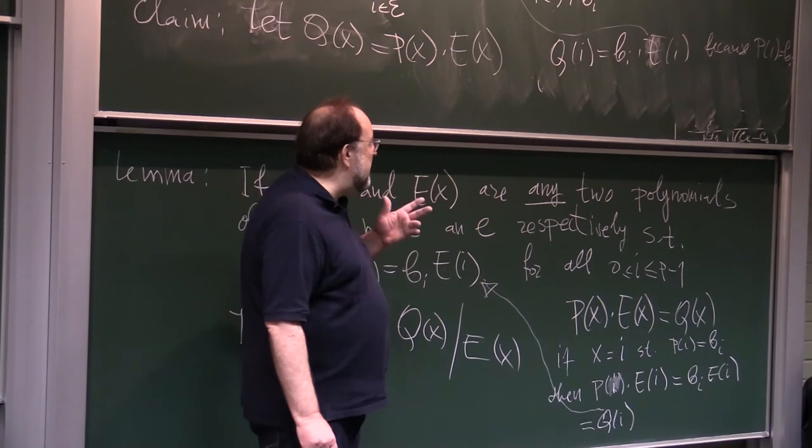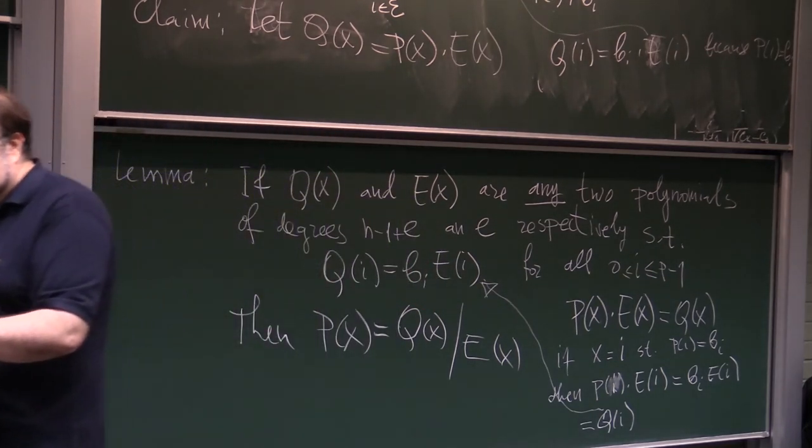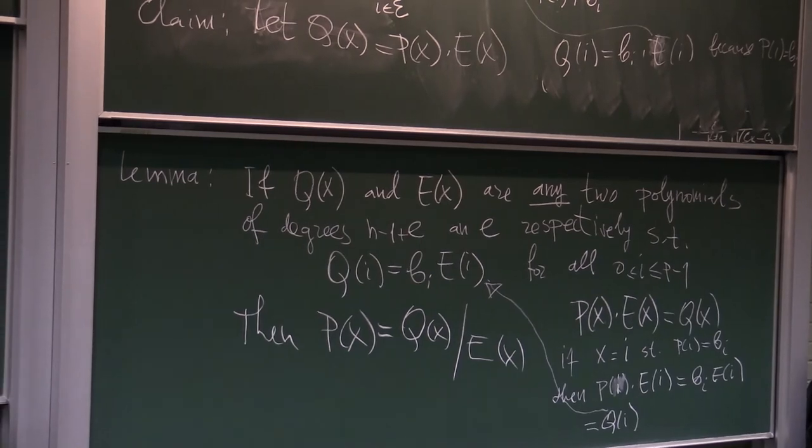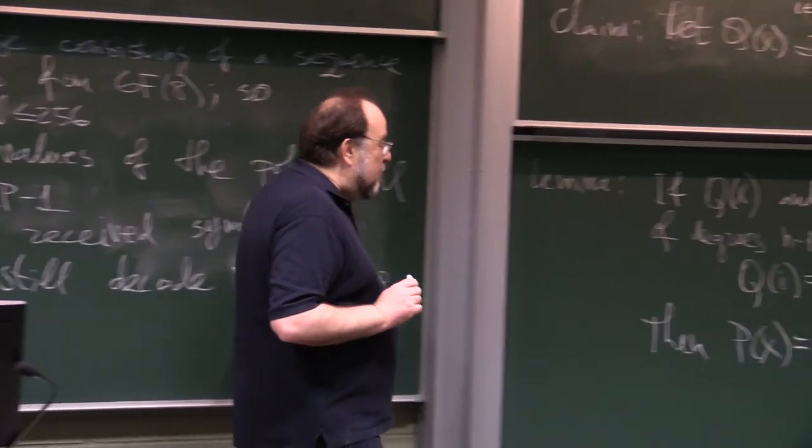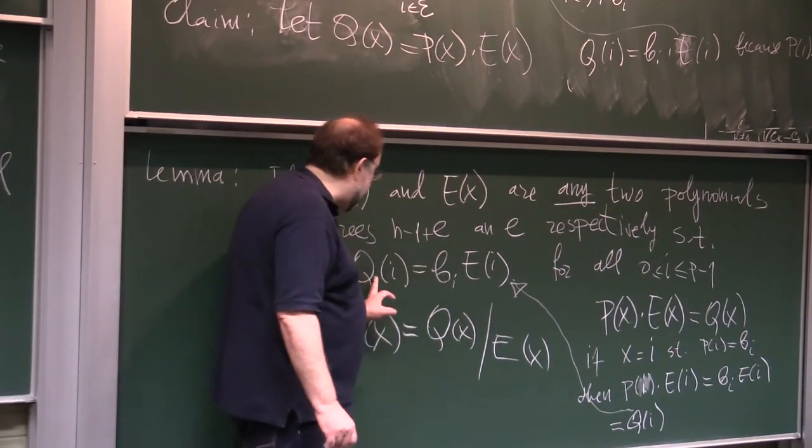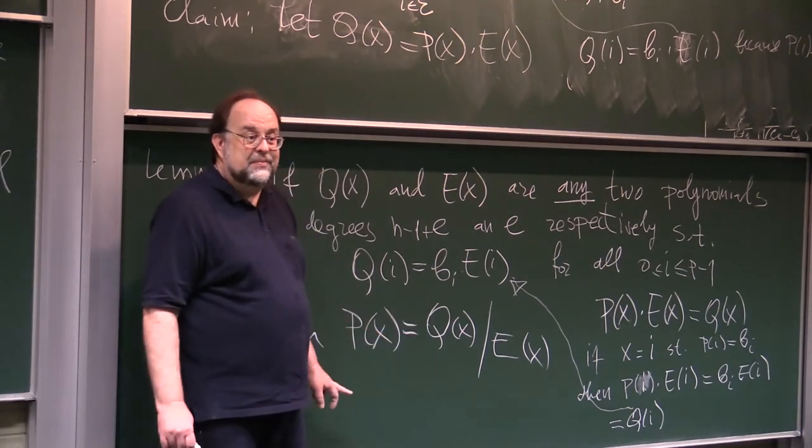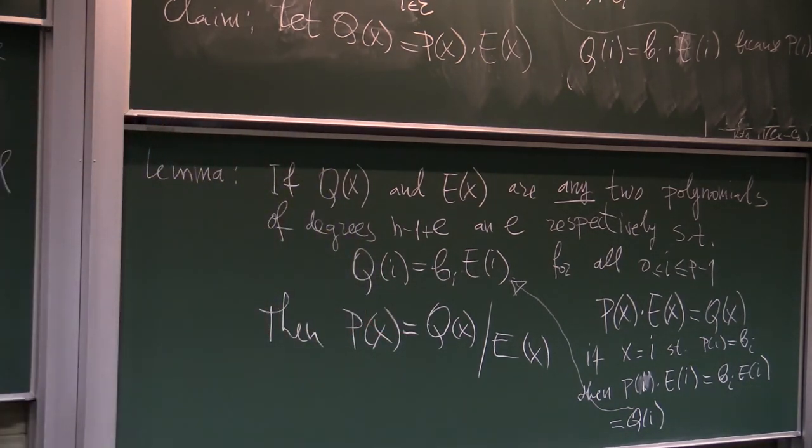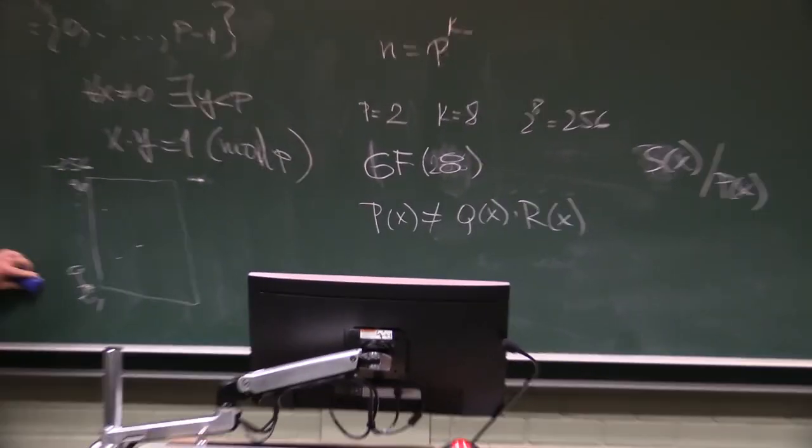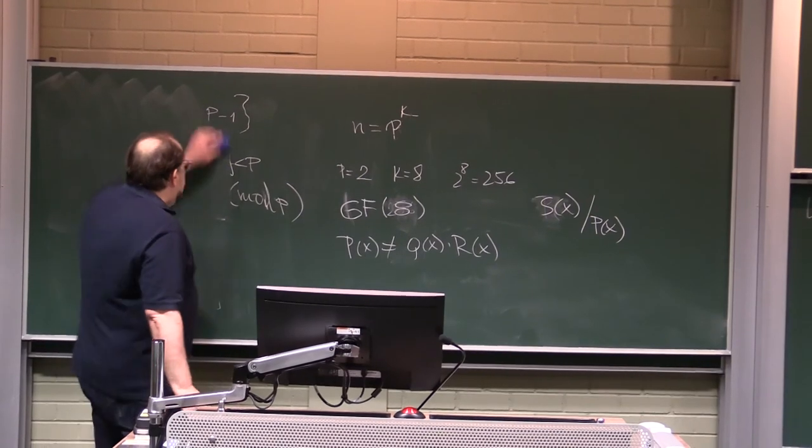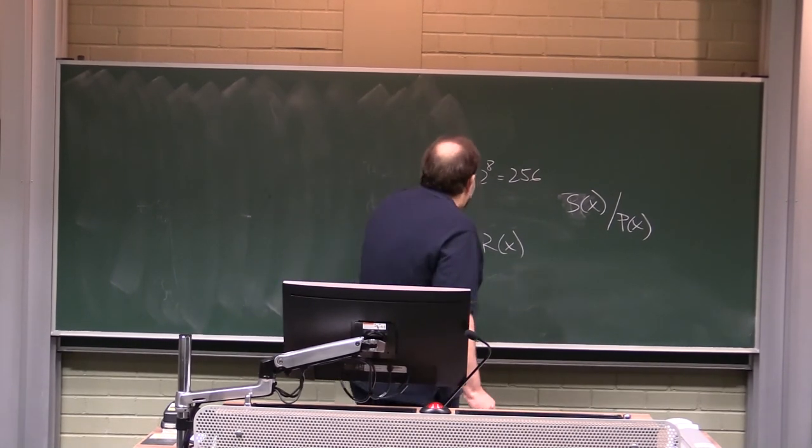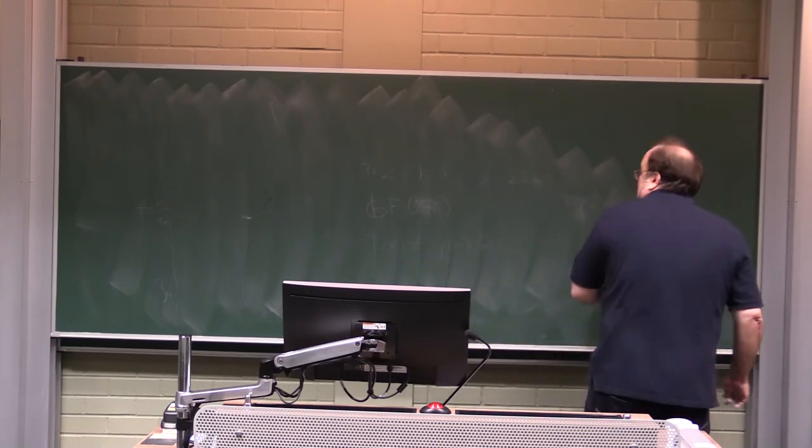So consequently, because they are equal, p of x can be produced simply by dividing q of x by e of x. Now this is not trivial stuff but it's described in meticulous detail in my notes, so read it several times and do mental kind of process of going through every step. Now what is the benefit? The benefit is that all what we have to do is produce any two polynomials that satisfy this set of equations. How do we do that? We do it by brute force mainly as follows.